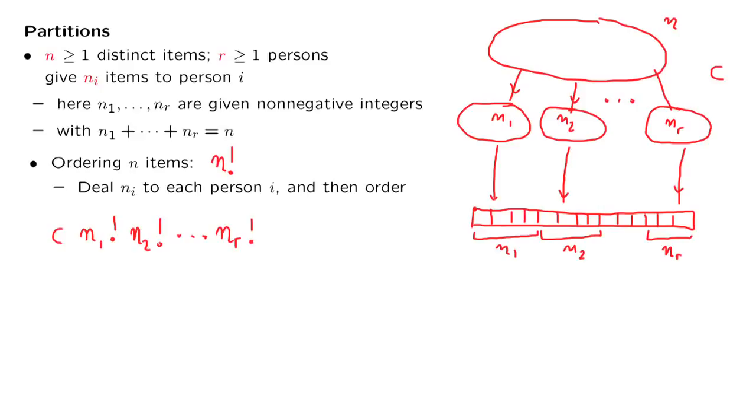And so on until the last person who has nr factorial choices for ordering their elements. This multi-stage process results in an ordered list of the n items. This is the number of ways this multi-stage process can be carried out. On the other hand, we know that the number of possible orderings of the items is n factorial. So we have this equality.